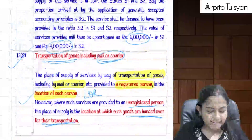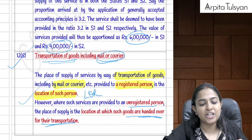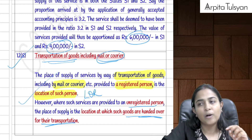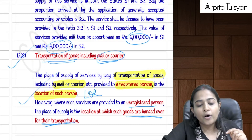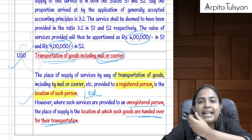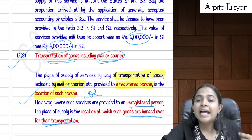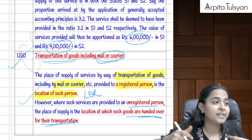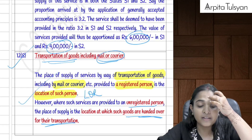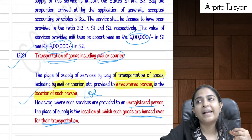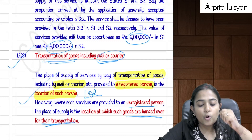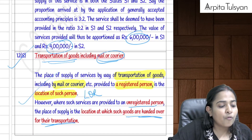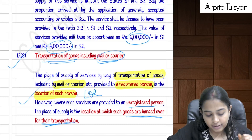Section 12(8) covers transportation of goods, including mail or couriers. If the service is provided to a registered person, the place of supply is the location of the recipient. If provided to an unregistered person, the place of supply is where the goods are handed over for transportation.